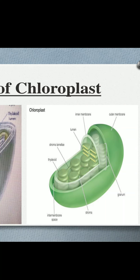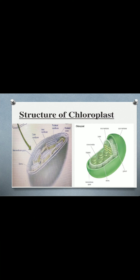The outer membrane of the chloroplast has many porins which allow the free movement of small molecules, similar to the mitochondria. The inner membrane is impermeable, but due to the presence of specific membrane transporters there is movement of ions or molecules from the outer membrane into the inner membrane and vice versa.